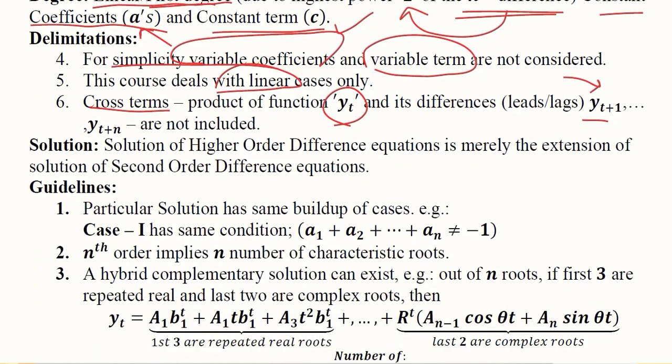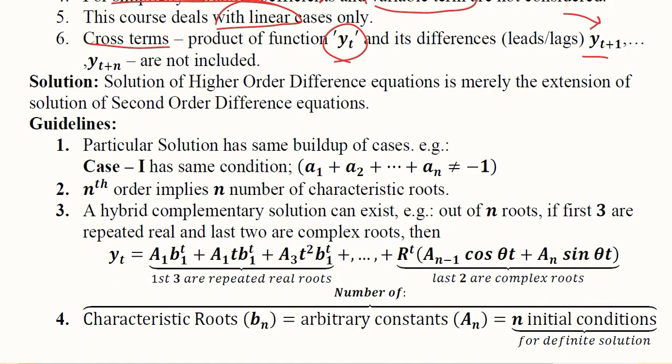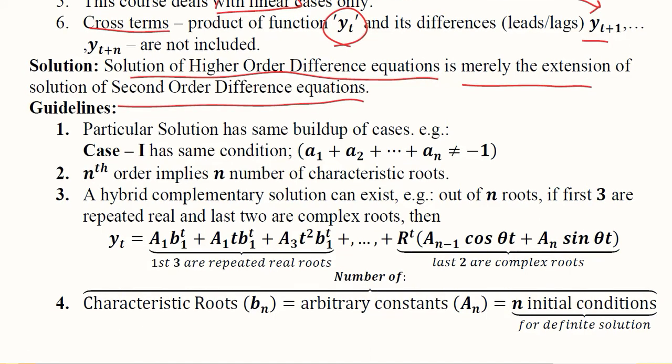The solution is found by finding yp, the particular solution, and the complementary function yc. The sum of both gives us the general and finally the definite solution of a higher-order difference equation. The solution of the higher-order difference equation is merely an extension of the solution of the second-order difference equation.